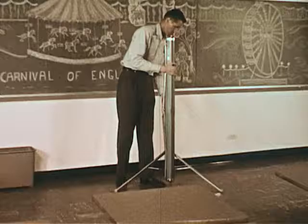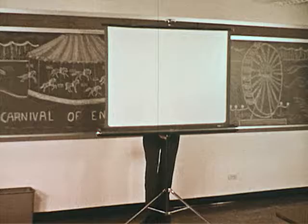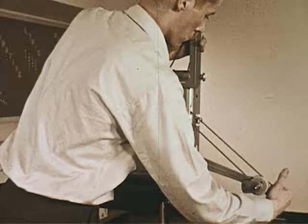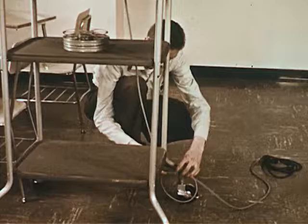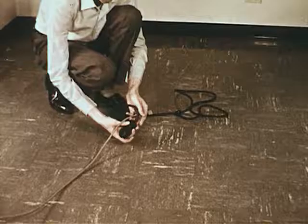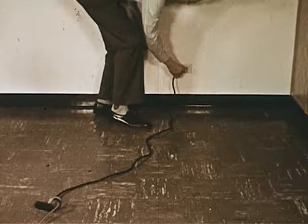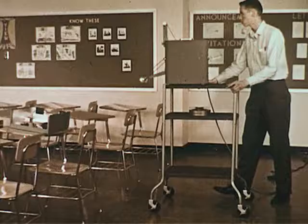This time the projectionist is able to set up the equipment before the class has assembled. Often the setup must be made while the class is in session. The screen is placed directly in front of the projector and raised to the proper height. The projector is then assembled. The power cord is twisted around the leg of the stand to prevent the projector from being tipped over if the cord is accidentally pulled. If an extension cord is used, it should be secured by a knot. If the sound fails to operate, it may be because the plug is reversed in the outlet.